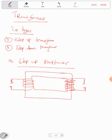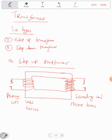This is a step-up transformer. On this side we go to the primary coil, and this part we go to the secondary coil. A step-up transformer has fewer turns on the primary coil and more turns on the secondary coil.